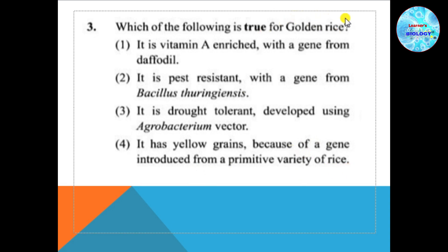Golden rice is a genetically modified rice. It is golden in color because of beta carotene, which is a derivative of vitamin A. It is genetically modified using a gene from daffodil. So the answer is option 1 — it is vitamin A enriched with a gene from daffodil.